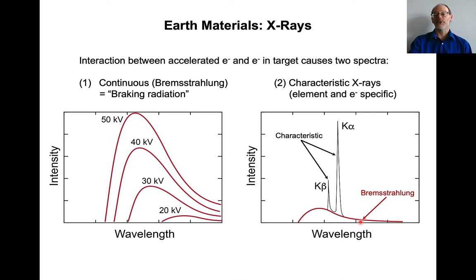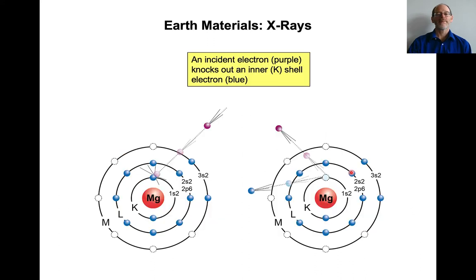What's very interesting and useful is that there are also x-rays called characteristic x-rays. These form little spiky bits on top of the continuous bremsstrahlung radiation. There are different labels: K-alpha, K-beta, L-alpha, L-beta, and so on. So you have an incoming electron — just using magnesium as an example here — it hits an electron in the magnesium atom, specifically a K-shell electron, and knocks that electron out of its orbital.